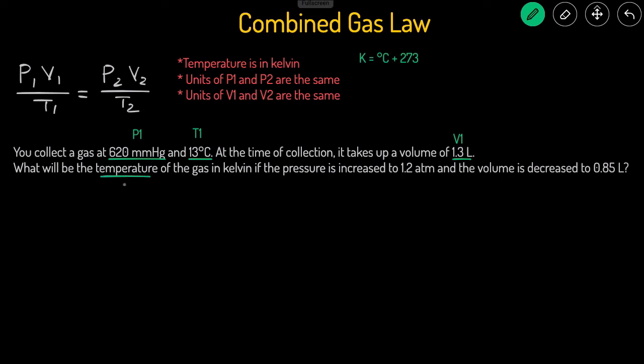What would the new temperature be, T2, of the gas in degrees Kelvin if the pressure is increased to 1.2 atm, so that's the new P2, and the volume is decreased to 0.85 liters, and that's V2. Here we have pressure changing, volume changing, and temperature all changing. This is another indication we're going to be using the combined gas law.